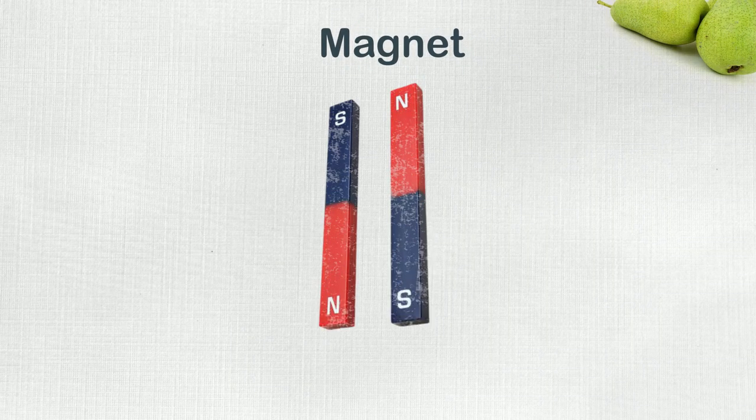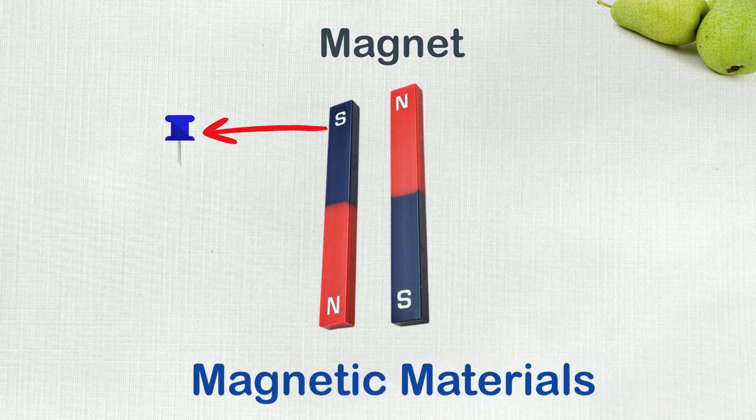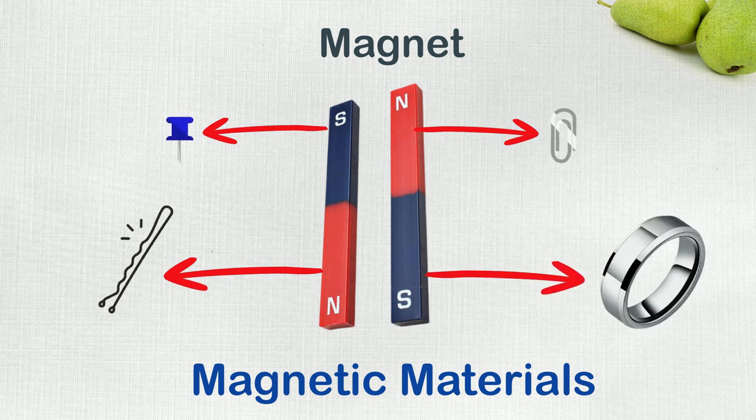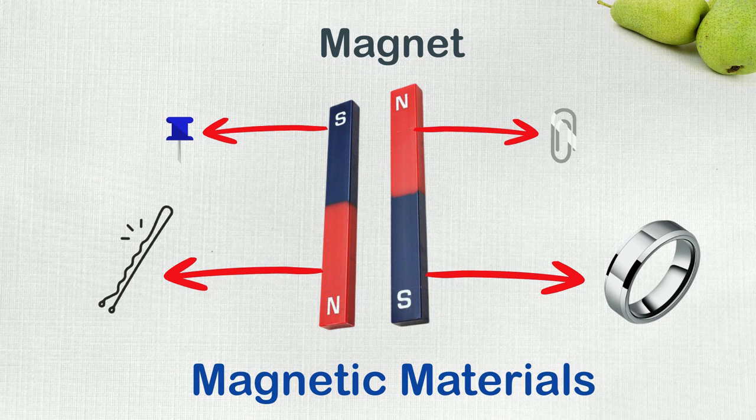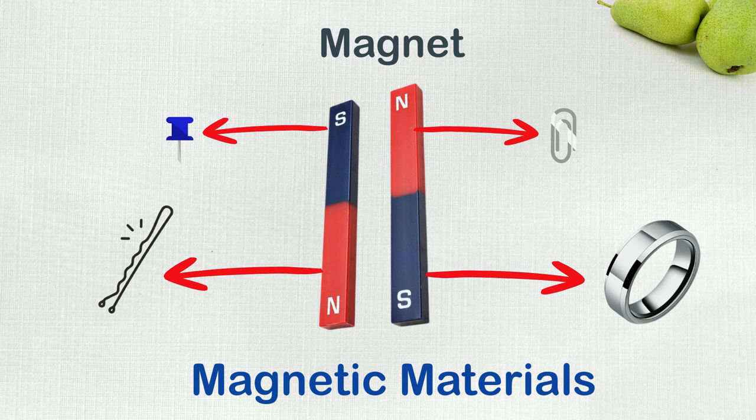You may have noticed from the experiment that the magnetic materials did get pulled up from the table towards the magnet, but they did so only when the magnet was brought close to them. The magnet did not attract them when it was far from them. Do you know why that is? It is because of magnetic field.